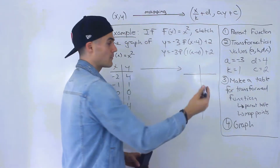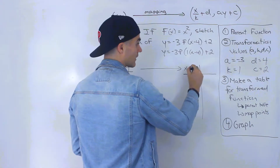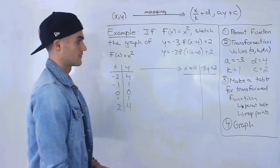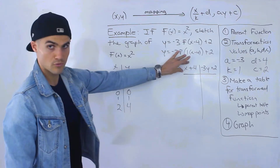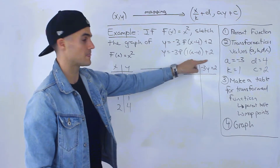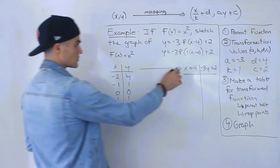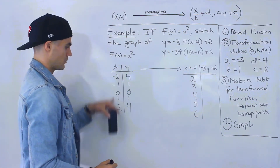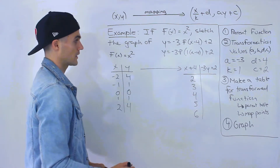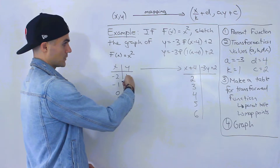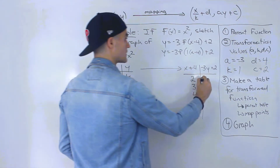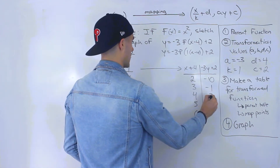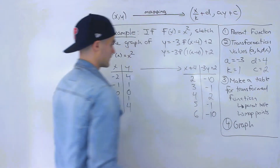All x values divide by k — dividing by 1, so x values stay the same — but then we add the d value of 4. All y values multiply by negative 3, then add 2. Going through the x values: negative 2 plus 4 gives positive 2, then 3, 4, 5, 6. For the y values: negative 3 times 4 is negative 12 plus 2 gives negative 10, then negative 1, positive 2, negative 1, negative 10.